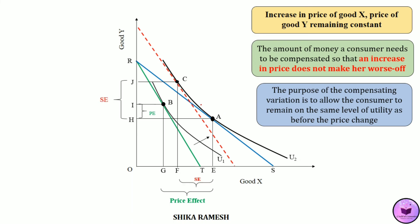The movement from point A to C shows the substitution effect. The consumer is maintaining utility level U2, but because good X has now become comparatively more expensive than good Y, the consumer is purchasing more of good Y and less of good X. In other words, EF amount of good X is given up in order to purchase HJ amount of good Y. This is the substitution effect.